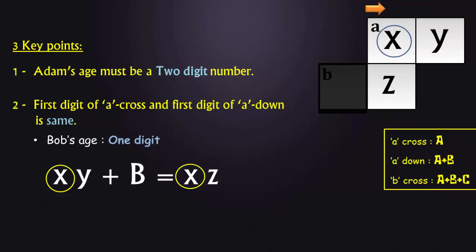So for example, if Adam's age is 10 years, then the maximum value of Bob's age can be 9, to keep this first block unchanged.